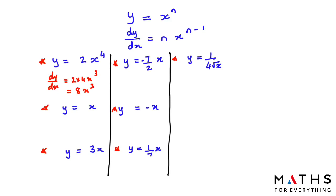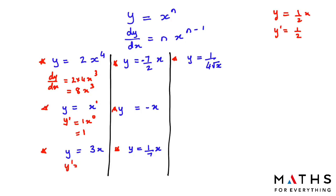If y = x, the power is 1. Bring the power in front and subtract 1: 1 − 1 = 0, and anything to the power of 0 is 1, so the answer is 1. The rule to remember: whenever differentiating a coefficient times x, the answer is just the coefficient. For y = half x, the answer is half. For y = 3x, the answer is 3. For y = negative 7 over 2 times x, the answer is negative 7 over 2.